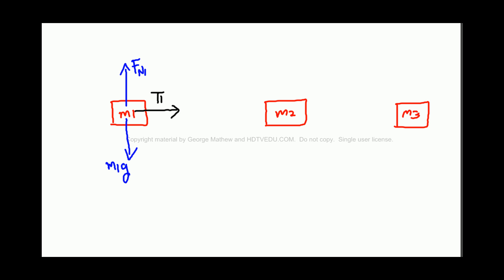Now we have to put the same tension T1 on M2. And again, you have M2g, gravitational force will always be there for a non-zero mass. And then we have Fn2. Fn2 and M2g should be equal in length.